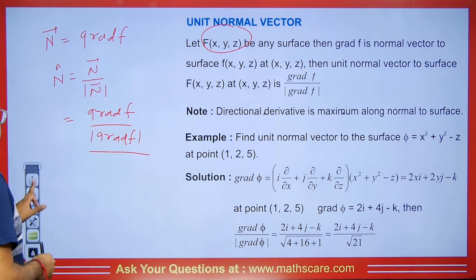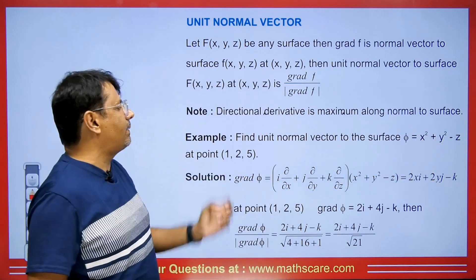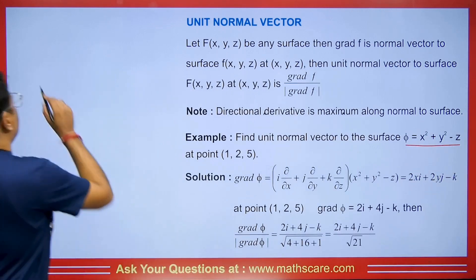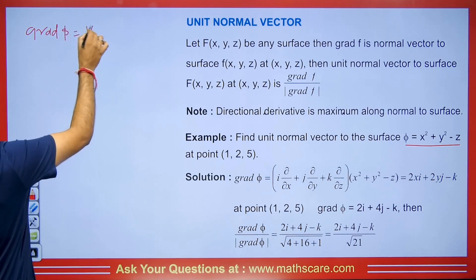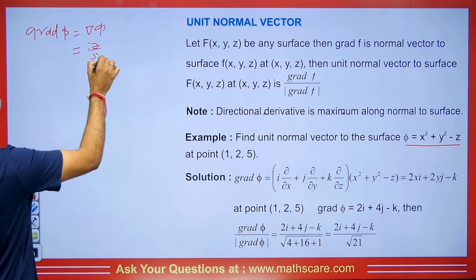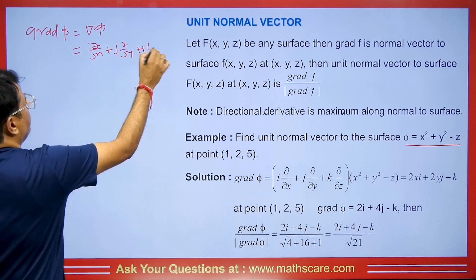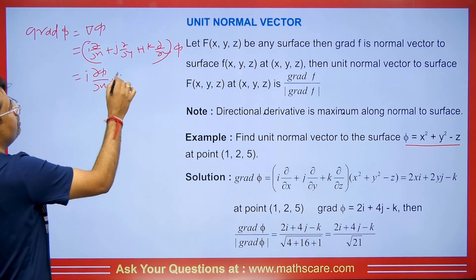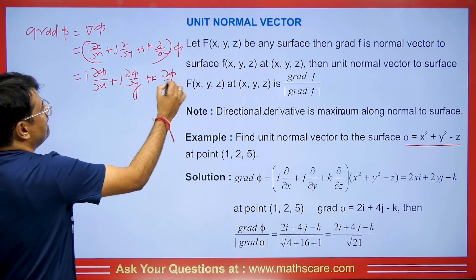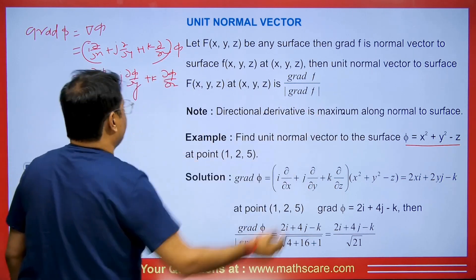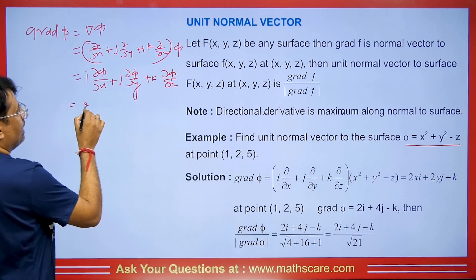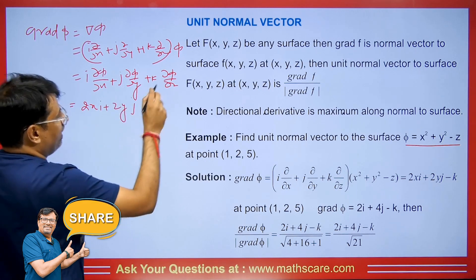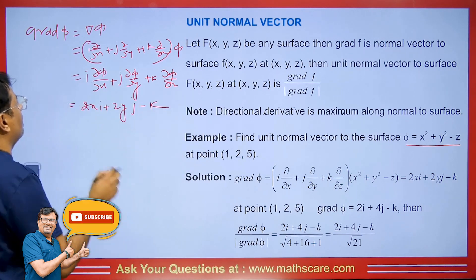Let me give you an example: if we have some surface given and we are asked at a certain point what will be the unit normal vector, first we find its gradient. The gradient of phi equals del phi, which means i(∂φ/∂x) + j(∂φ/∂y) + k(∂φ/∂z). Taking the derivative of phi with respect to x gives 2x, so that will be 2xi. Taking the derivative with respect to y gives 2y, so that will be 2yj.